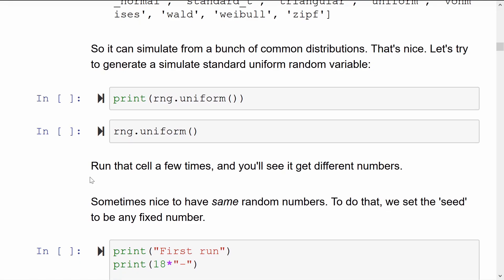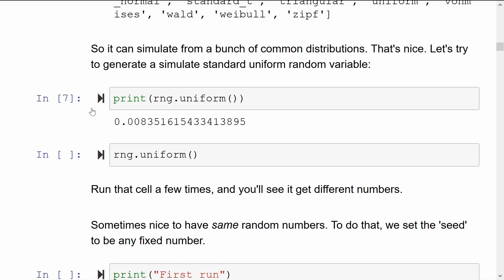If we just run rng.uniform, Python gives us a standard uniform random variable that is between 0 and 1. And if we keep running this cell, it'll give us different random numbers. Here, the print function is not actually necessary because Jupyter will automatically print out the last line of any code cell that you have in the Jupyter notebook.